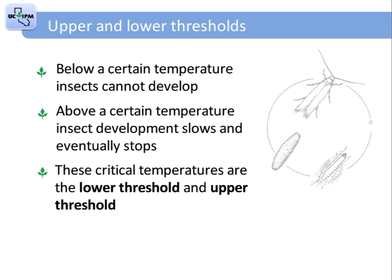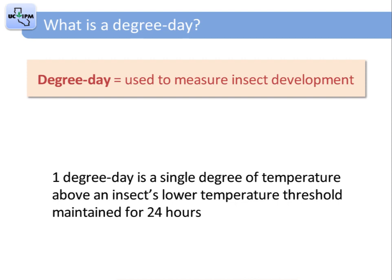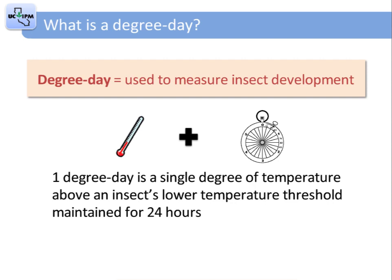When temperatures fall between the upper and lower thresholds, the insect will develop. Depending on how long these temperatures occur, we get units called degree days, which can be used to measure development. A degree day is a unit combining temperature and time used to measure development of an organism. One degree day is a single degree of temperature above an insect's lower temperature threshold maintained for 24 hours — one degree above the lower threshold maintained for one day.